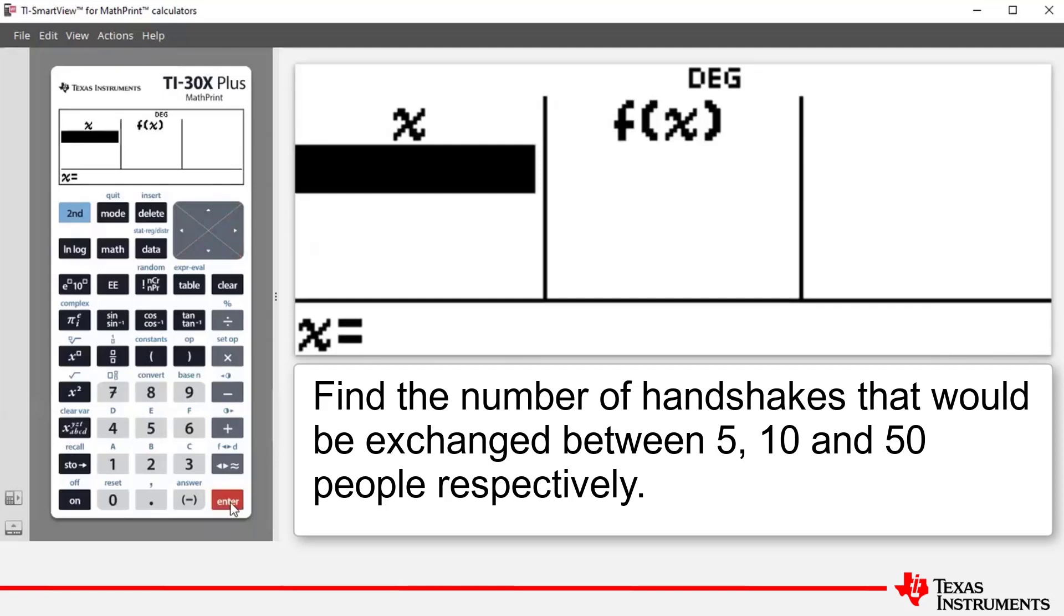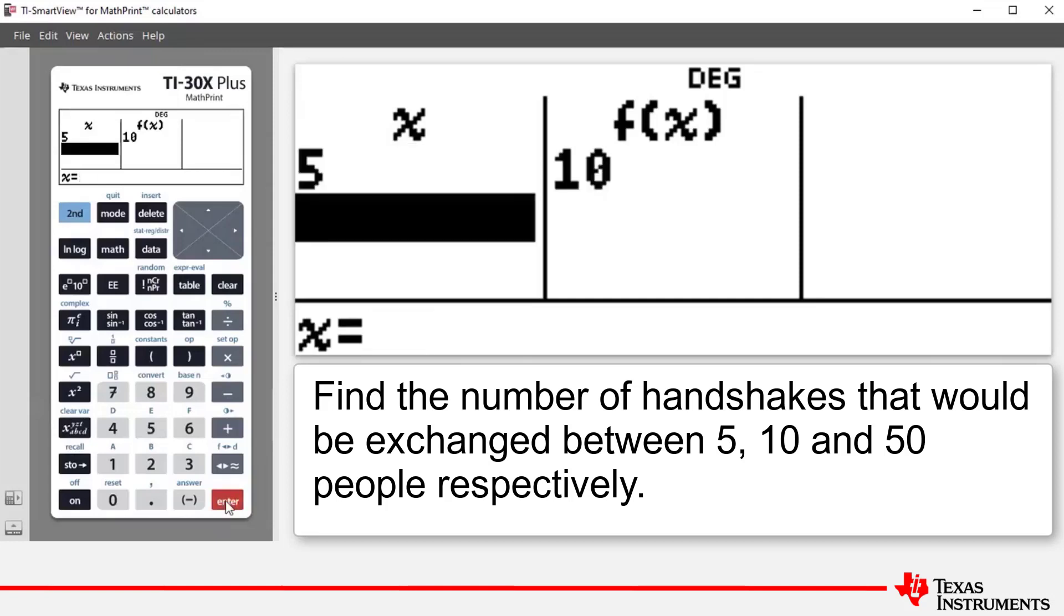Now let's say we wanted to find the number of handshakes that would be exchanged between 5 people at the party. So if we enter 5 for x and press enter, it tells us that there are 10 handshakes.